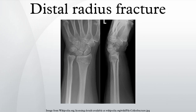Key descriptors include: articular incongruity, radial shortening, radial angulation, comminution of the fracture, open or closed injury, associated ulnar styloid fracture, and associated soft tissue injuries.